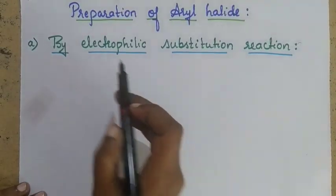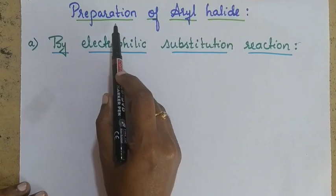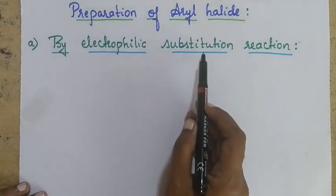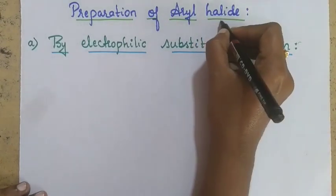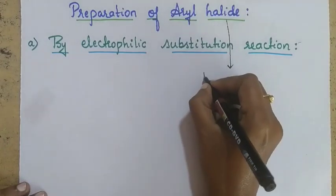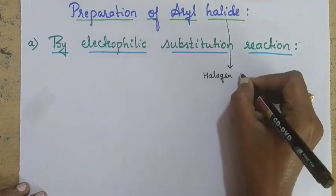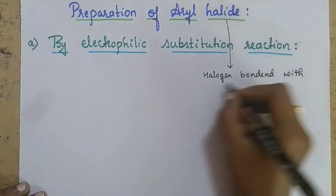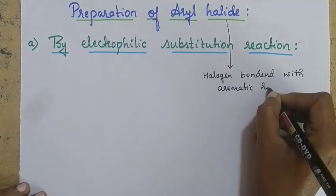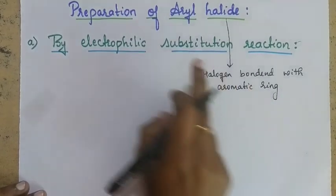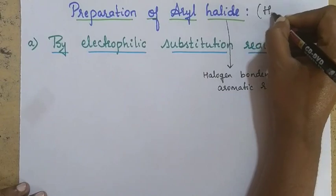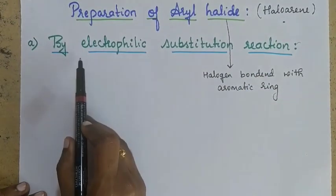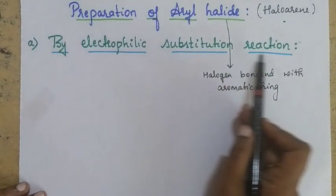Hello everyone. In today's class let us discuss about preparation of aryl halide by the method electrophilic substitution reaction. Aryl halide means if halogen is bonded with an aromatic ring, we call it as aryl halide — in other words, it is nothing but haloarene. We are going to prepare haloarene using the electrophilic substitution reaction.